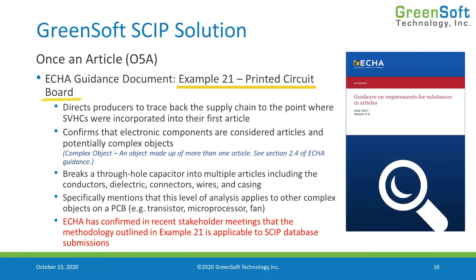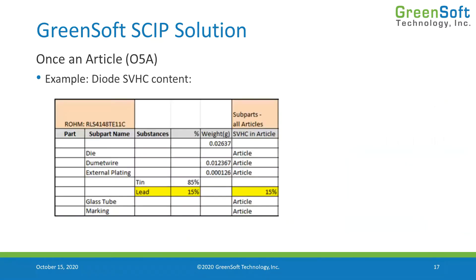We have to consider the article content within these components and trace back the supply chain to the point where the SVHCs were incorporated into their very first article. This has been in place since 2017 when the guidance document came out, but the supply chain has largely ignored it. Let me show you why this matters so much in the context of SKIP.